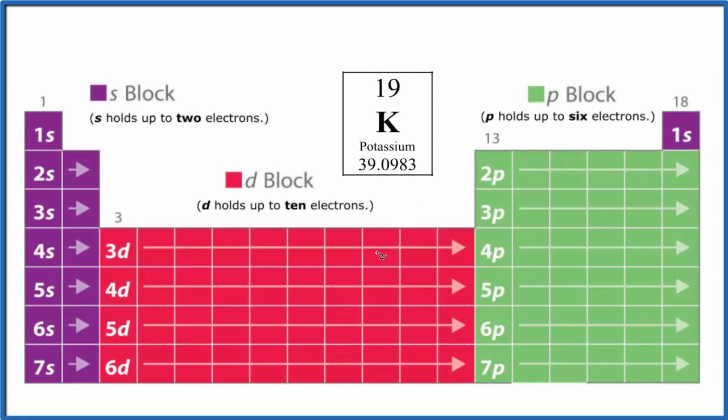Let's take a look at how to draw the atomic orbital diagram for potassium, that's K, on the periodic table.